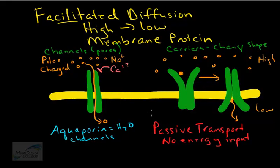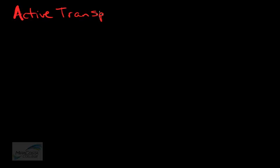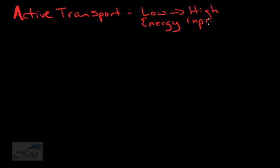If a cell needs to transport a material against its concentration gradient — from low to high — it must expend additional energy to make that happen. That's called active transport. Active transport involves the movement of materials across the cell membrane against their concentration gradient, from an area of low concentration to an area of high concentration. The cell must expend energy, which will be in the form directly or indirectly of ATP — the universal energy currency used by all cells.